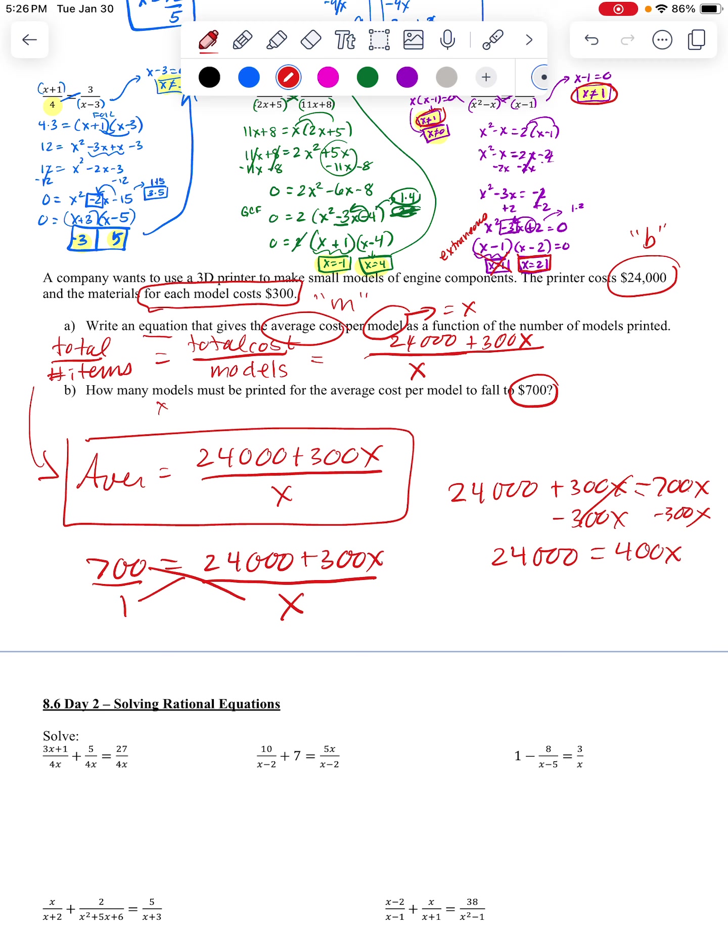I'm going to have 24,700 minus 300 is 400X. And I know these are big numbers, but you're still just solving like you did in Algebra 1. So the only thing that's kind of new and tricky is this and this, setting it up as a ratio and cross-multiplying. Now,